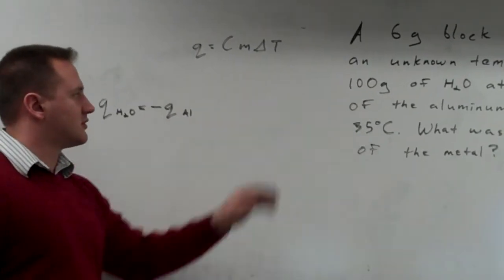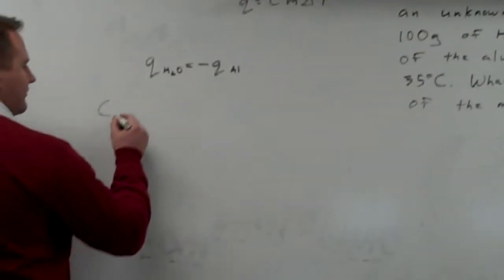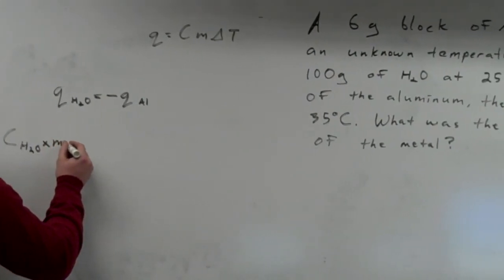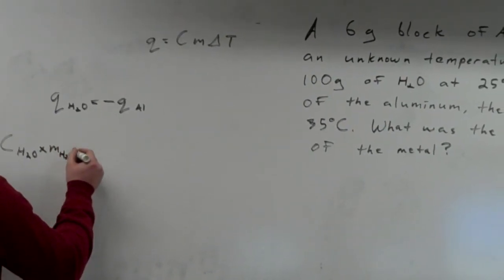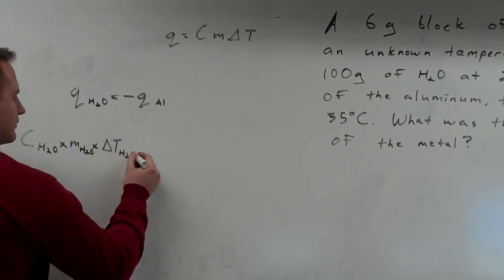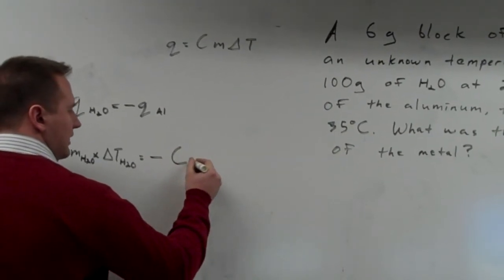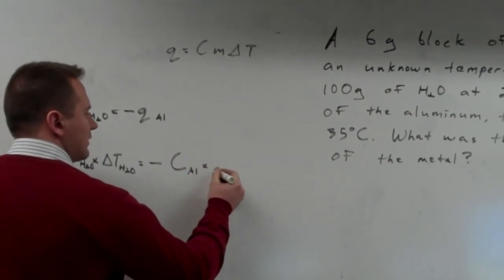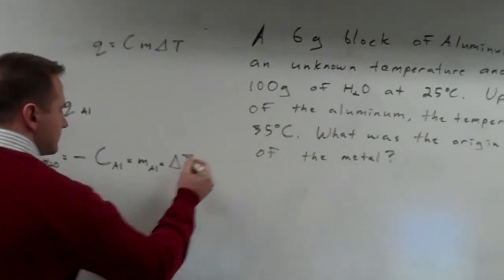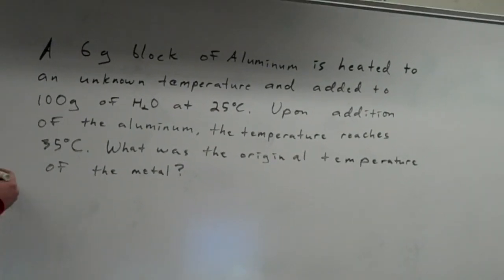We're going to be solving for the change in temperature of aluminum. Expanding the equation: the specific heat of the water multiplied by the mass of the water times the change in temperature of the water is going to be equal to negative the specific heat of the metal aluminum times its mass times the change in temperature of the aluminum. That change in temperature of aluminum is going to be the variable we solve for.